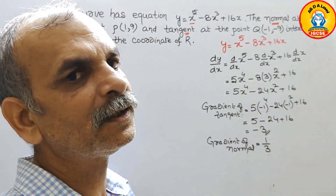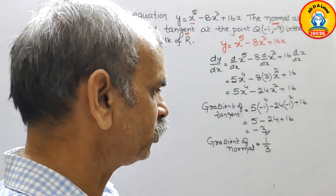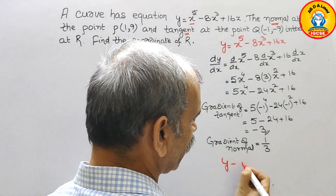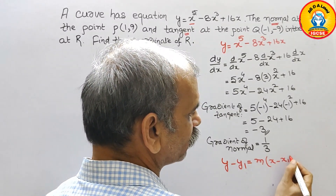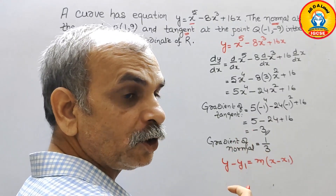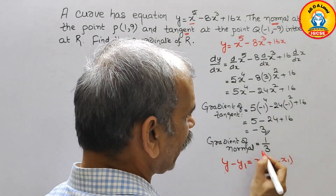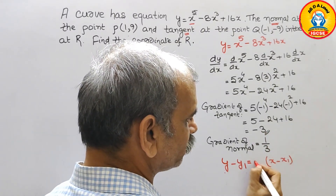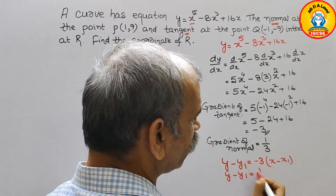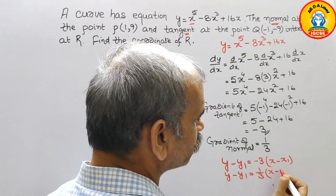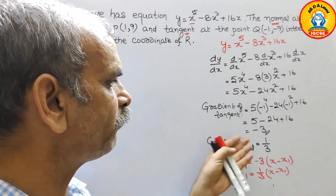Now we have to write the tangent equation and the normal equation. The formula is y - y₁ = m(x - x₁). For the tangent, m = -3. For the normal, the equation is y - y₁ = (1/3)(x - x₁). Now we substitute the coordinates of the respective points into each formula.